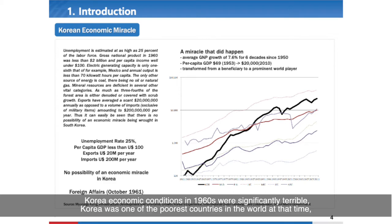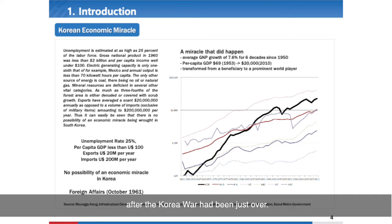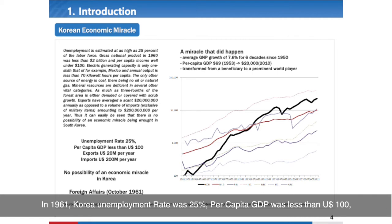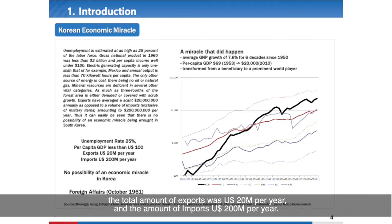Korea's economic condition in the 1960s was significantly terrible. Korea was one of the poorest countries in the world at that time, after the Korean War had just ended. We can check these facts from this slide. In 1961, Korea's employment rate was 25%, GDP was less than 100 US dollars, and total exports were 20 million US dollars per year.